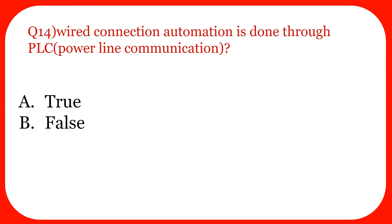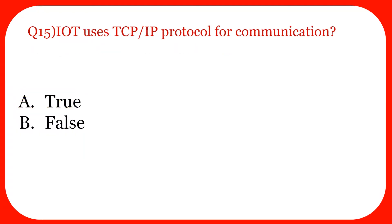Question fourteen: Wired communication automation is done through PLC — power line communication — true or false? The answer is true. Whenever we want wired communication we go with PLC; for wireless connections we go with RFID. Question fifteen: IoT uses TCP/IP protocol for communication — true or false? The answer is true.